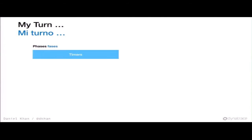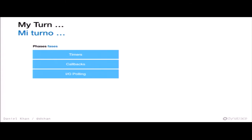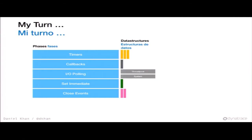Let me show you the phases. The first phase is called 'timers' — we process all timers. The next is 'callbacks.' Then we have a phase dedicated to 'IO polling,' then one for 'setImmediate,' and then 'close events.' For each phase there are data structures — some may have a stack of timers, some do polling against system events or the thread pool. The switch between one phase and another is a tick.